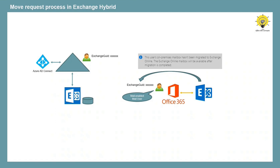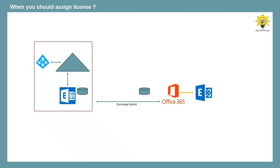Microsoft recommends assigning Exchange Online license to the mail user once migration is completed. In Exchange Hybrid migration, you should never assign a license to the mail user account before migration. When a mailbox is migrated from on-premise to Office 365, the mailbox contents are preserved in Microsoft data centers for 30 days. That means you have 30 days to assign a license to the mail user account after migration is completed. If you do not assign the license within 30 days, the mailbox contents will be purged from Microsoft servers and you will not be able to recover them.